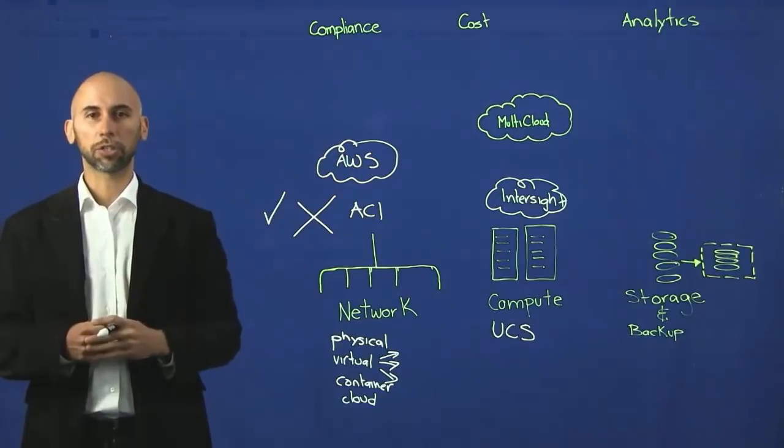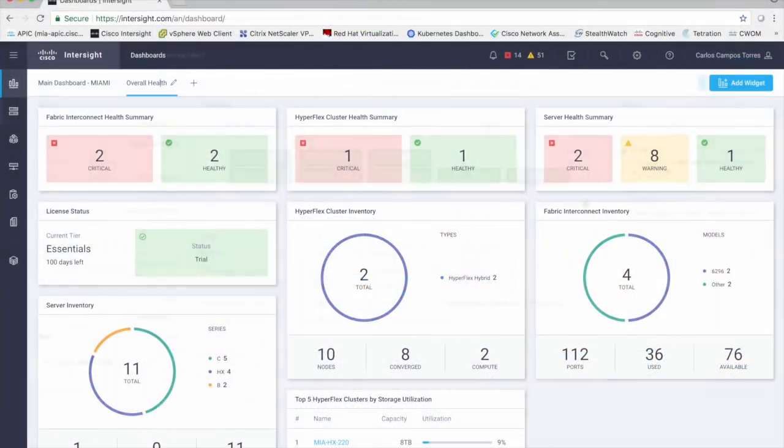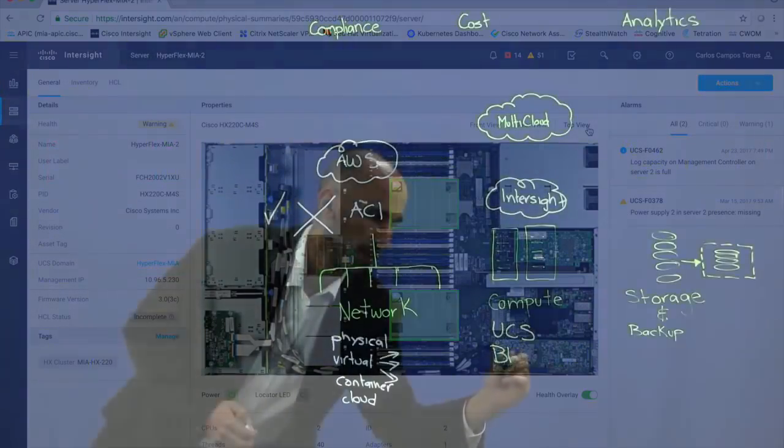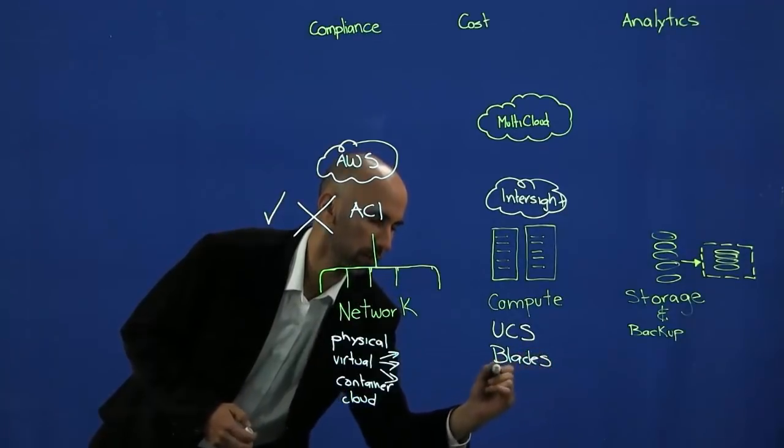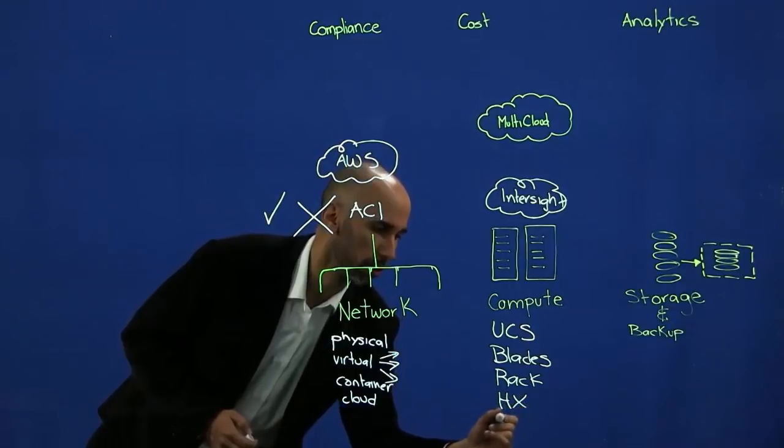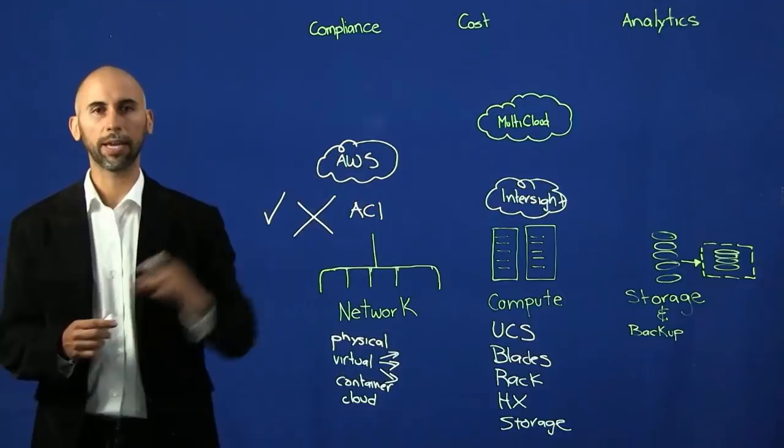The idea with Intersight is that you manage centrally from the cloud in a software-as-a-service based solution, thousands of servers. It doesn't matter its form factor. They may be blades, rack servers, hyper-converged, storage servers, or any other form factor from the cloud.